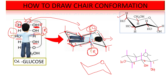For the fourth carbon, the OH group is on the right side, so we place it downwards. For the fifth carbon, the CH2OH group is always placed in the upward position. No OH group is present on carbon five because that OH has already formed the ring structure with carbon one, so only H remains and it is placed downwards on carbon five. All remaining gaps are filled with hydrogen atoms.